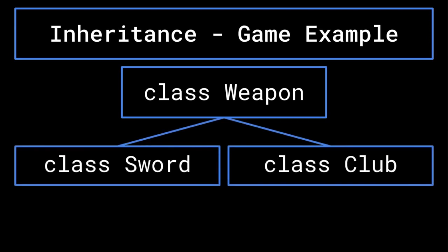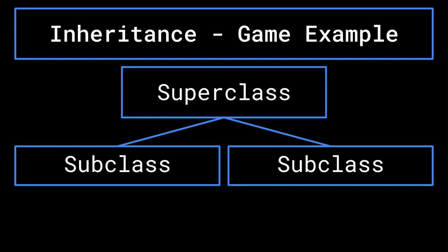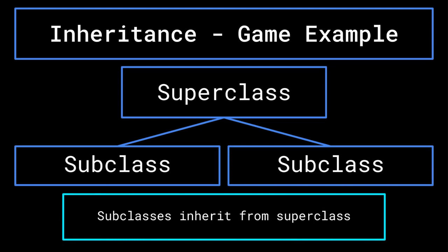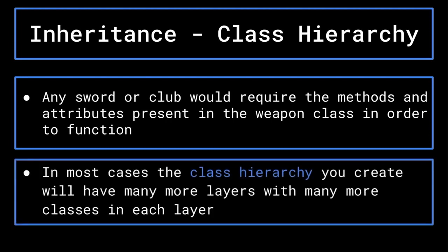You would then want some more classes to represent specific weapons, such as a sword or a club. These classes would act differently from one another, as swords and clubs have certain different attributes — such as a sword being made for cutting whereas a club is blunt. These differences would be represented in different values for their attributes, as well as possibly different attributes altogether. However, they do share much of the same behavior, as they are both members of the weapons class. In this case, the weapon class would be the superclass, and the sword and club classes that extend the weapon class would be subclasses in relation to it.